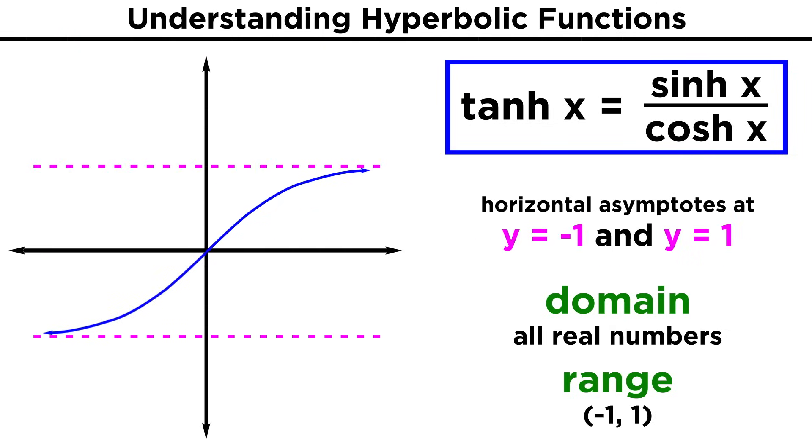Hyperbolic tangent will just be hyperbolic sine over hyperbolic cosine, and that will look like this, with horizontal asymptotes at negative one and one.